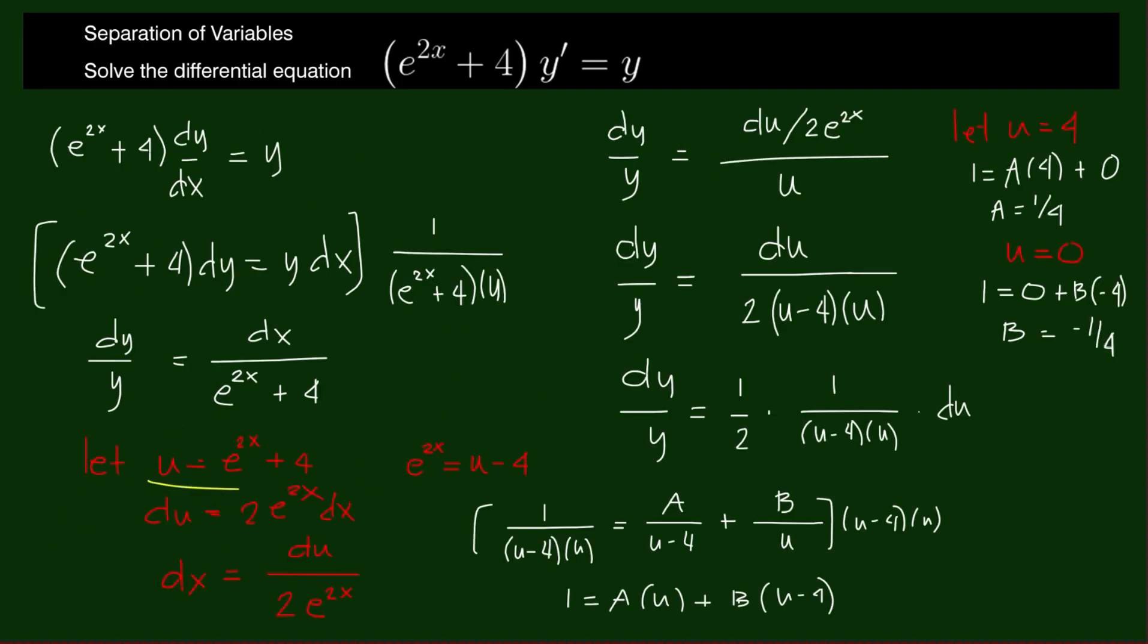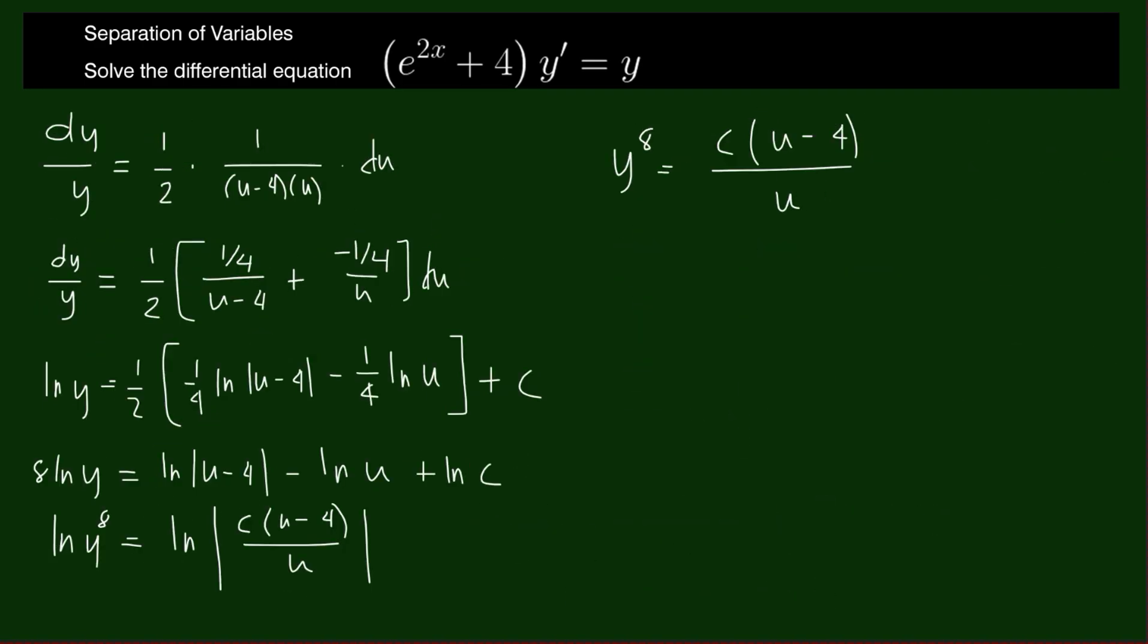But u is e to the 2x plus 4. So we have y to the 8 equals c times e to the 2x plus 4 minus 4 over e to the 2x plus 4. Now we have y to the 8 times e to the 2x plus 4 equals c e to the 2x.